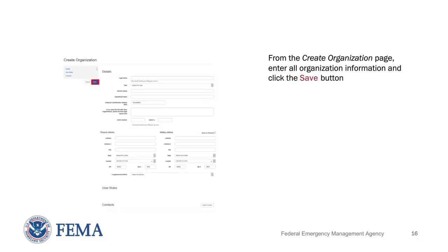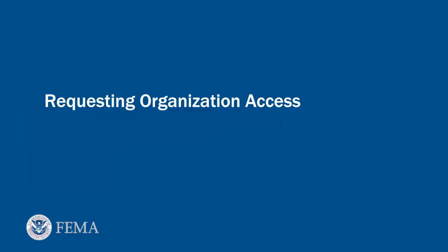An organization's contacts are not ND Grants Management System users. Without an ND Grants Management System account, they will not have system privileges. Once you have created an ND Grants System user account, you must either request access to an existing organization or create a new organization. If the organization has already been created, you must submit an organization access request to access the organization's applications and awards.